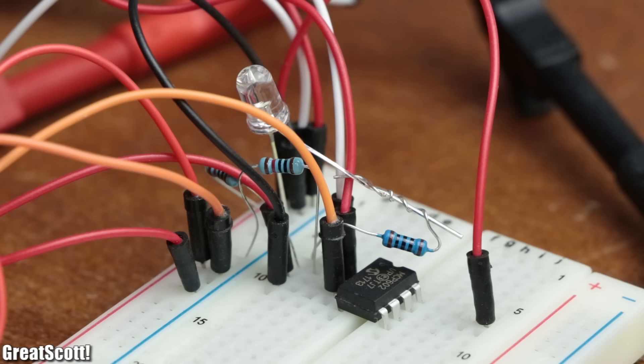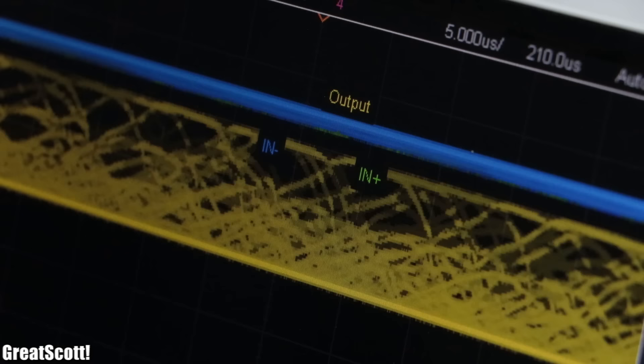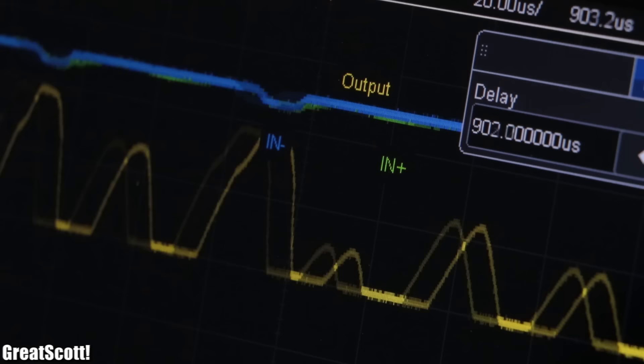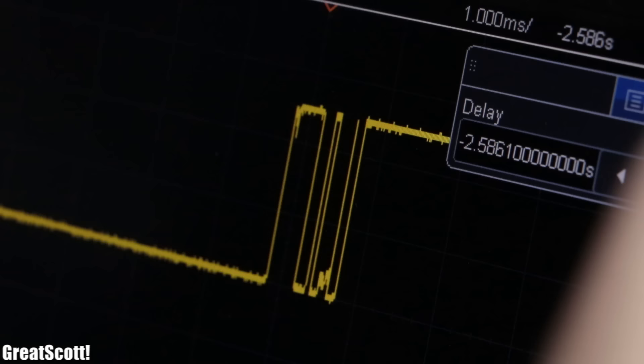But of course, comparators are not perfect. If we observe the output voltage while the monitored voltage crosses the reference voltage, then we can see that there is not one definite transition—there are tons of pulses. So in this video, I will tell you all the basics about so-called Schmitt triggers, which would be the solution to our noise-related problem. Let's get started.